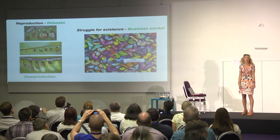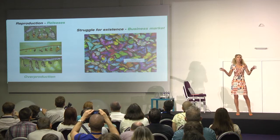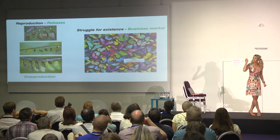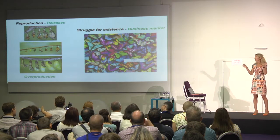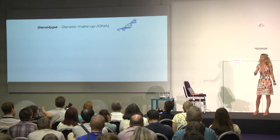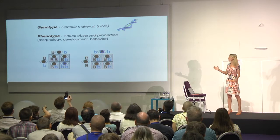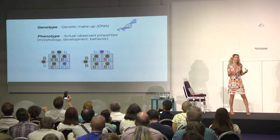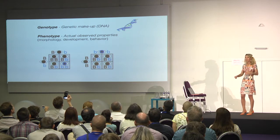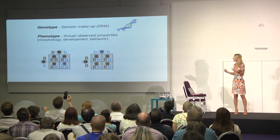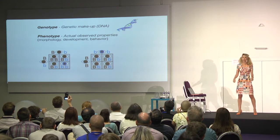And also, we struggle for existence on a very tough business market all the time. But what is the main difference between two different organisms or species? What is the cause of the difference — why we are all unique? It's our genetic material. Genotype is a set of potential properties that we have, usually in DNA. But what is actually visible, the actual observed properties, is a phenotype — it's morphology, development, behavior.